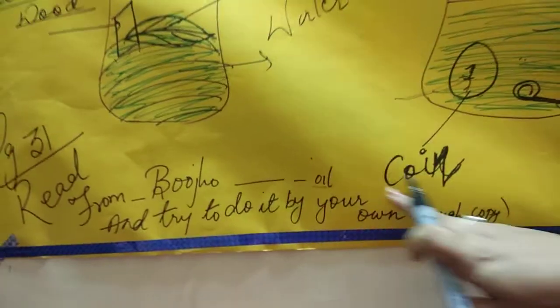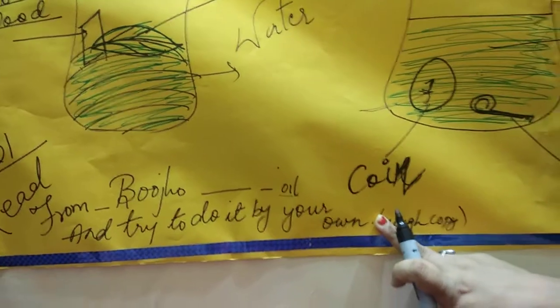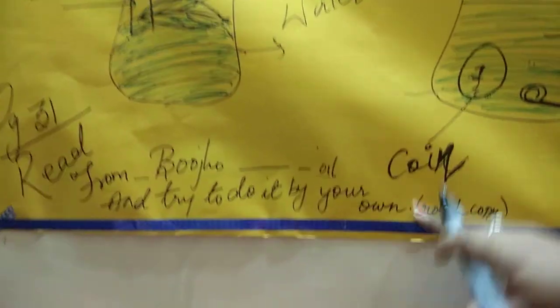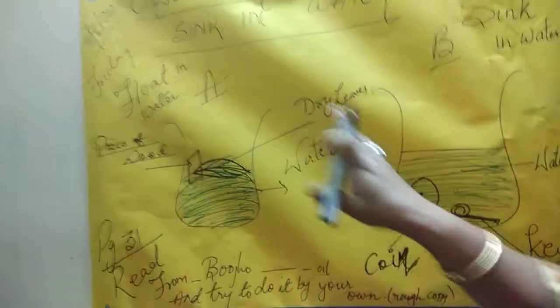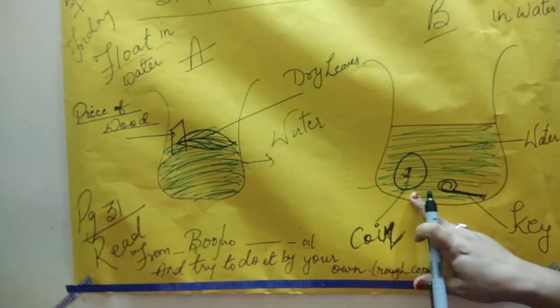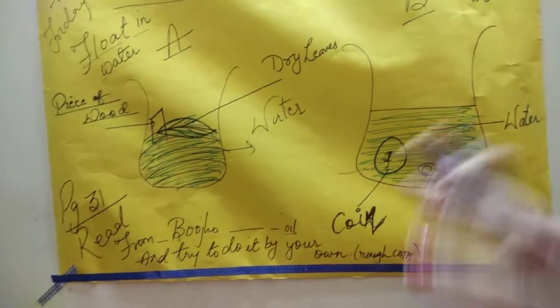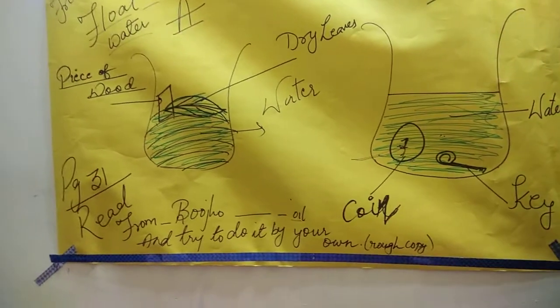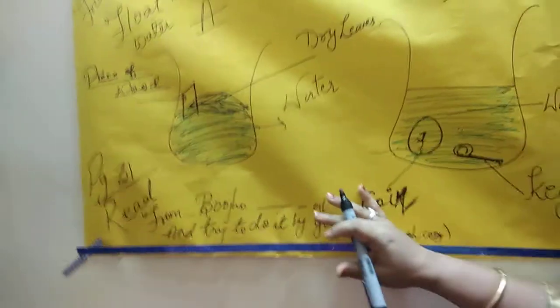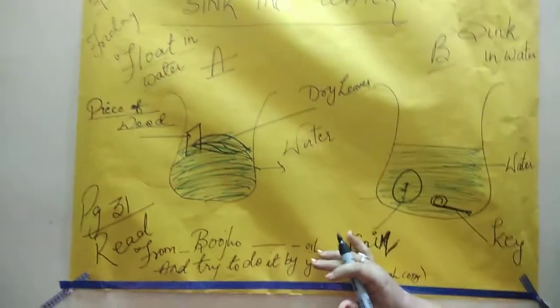And try to do it by your own. There are certain things which they are asking you, rather than these things which I have given you - wood, dry leaves, coin, key. Inko chhod ke give more examples which float in water or sink in water.